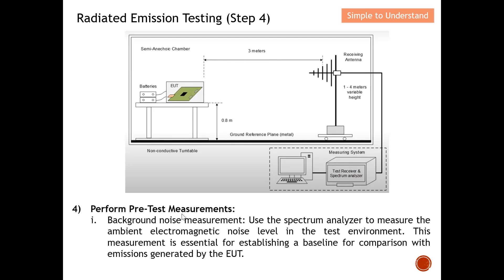Step 4: Perform pre-test background noise measurement. Use the spectrum analyzer to measure the ambient electromagnetic noise level in the test environment. This measurement is essential for establishing a baseline for comparison with emissions generated by the EUT. With the EUT not powered on, do a quick measurement to capture your ambient electromagnetic noise level, so that later you can quantify the radiation from your EUT distinctly.